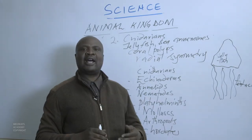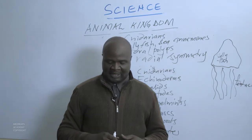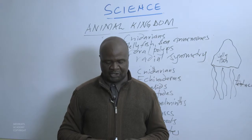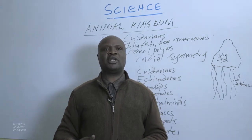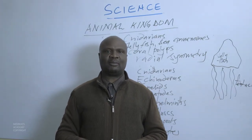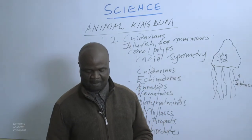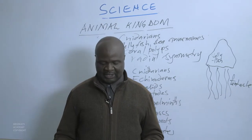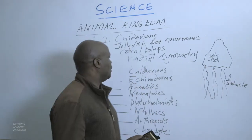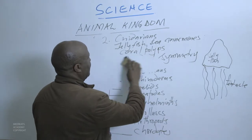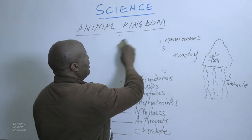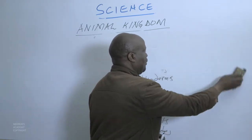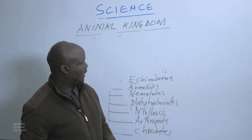We can go to the third phylum, called Echinoderms. We want to see the characteristics of Echinoderms — what kind of characteristics they have, the structures they have, and how they behave. Examples of animals present among the Echinoderms include the starfish.